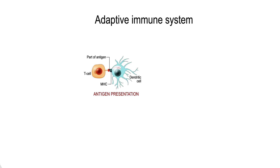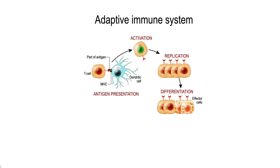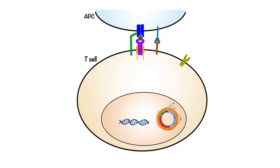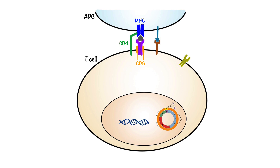This sets off a signaling cascade that allows T cells to replicate, differentiate and secrete signaling proteins called cytokines, which in turn activate more cells of the immune system. Depending on the type of T cell, either the co-receptor CD8 or CD4 binds to the MHC molecule. The signal transduction is then carried through CD3 that is physically associated with the T cell receptor.